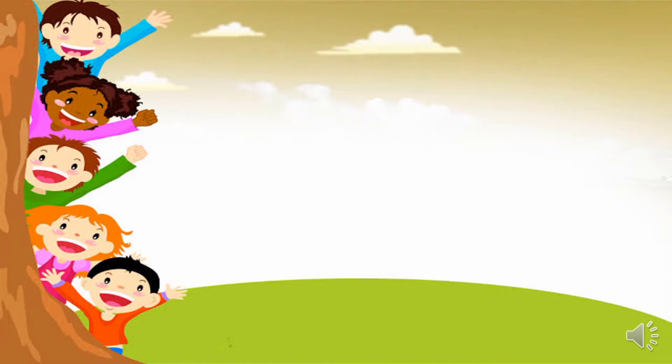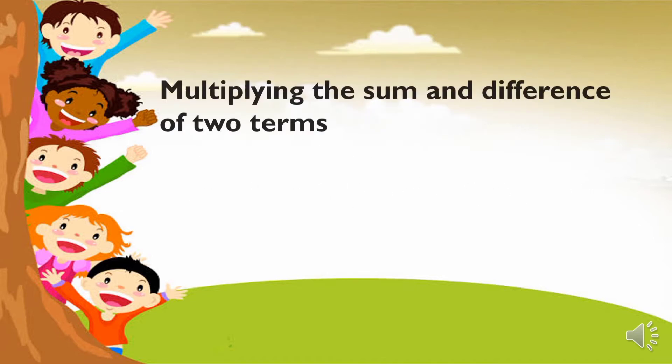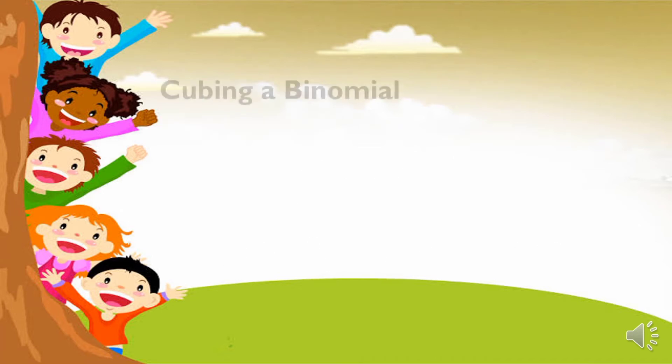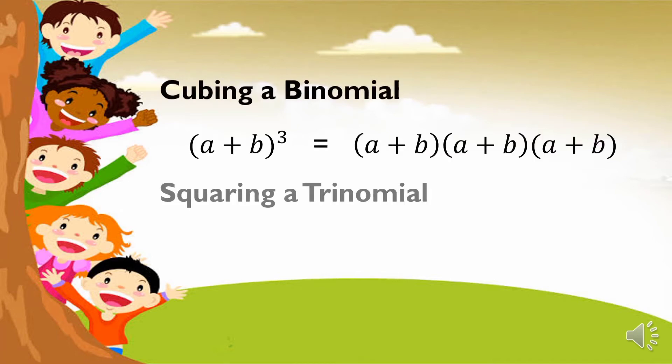Now, let's talk about what in special product. First, we have here multiplying the sum and difference of two terms. Second, we have here squaring a binomial. Next, we have cubing a binomial. And lastly, we have here squaring a trinomial.